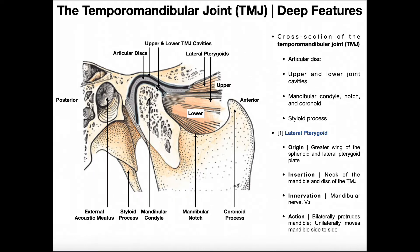The temporomandibular joint is interesting because it has an articular disc — we've seen this before in the sternoclavicular and acromioclavicular joints. These articular discs can transform the movements allowed at a joint, and we'll see some unique movements here. Structurally, the articular disc separates the joint cavity into two separate smaller cavities: an upper or superior TMJ cavity and a lower or inferior TMJ cavity. Instead of one larger synovial cavity, we have two, created by this articular disc.